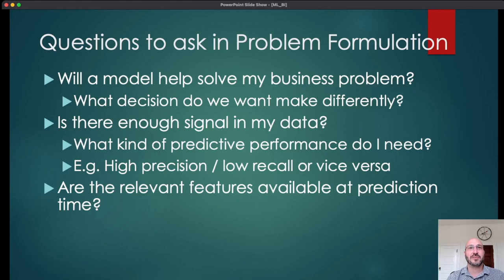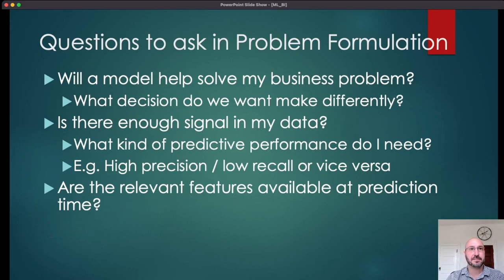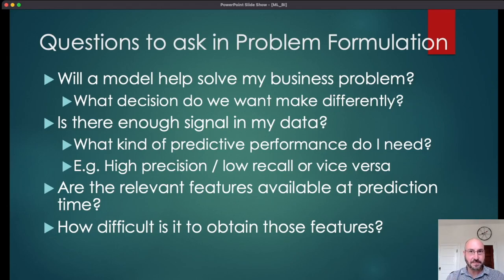Another question to ask is: are the relevant features available at prediction time? A lot of times we work with historical data and build a model with some features, then realize when we go into production that those features are not actually available at the time we'd like to make the prediction. Similarly, we sometimes forget to assess how difficult it is to add all these features to a model in production. Features might add a little predictive power but be very costly to build the data pipeline for — and you need to assess whether that value is worth the difficulty.